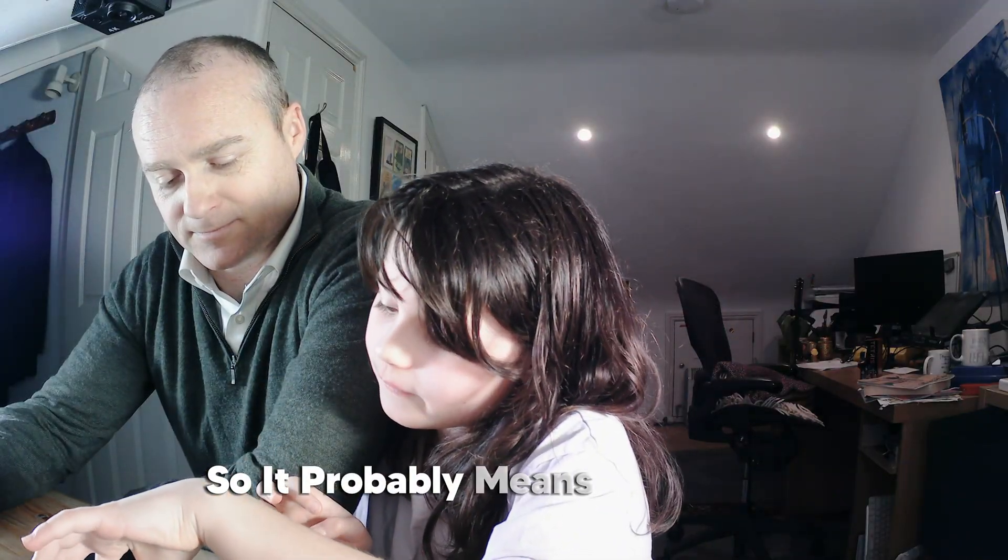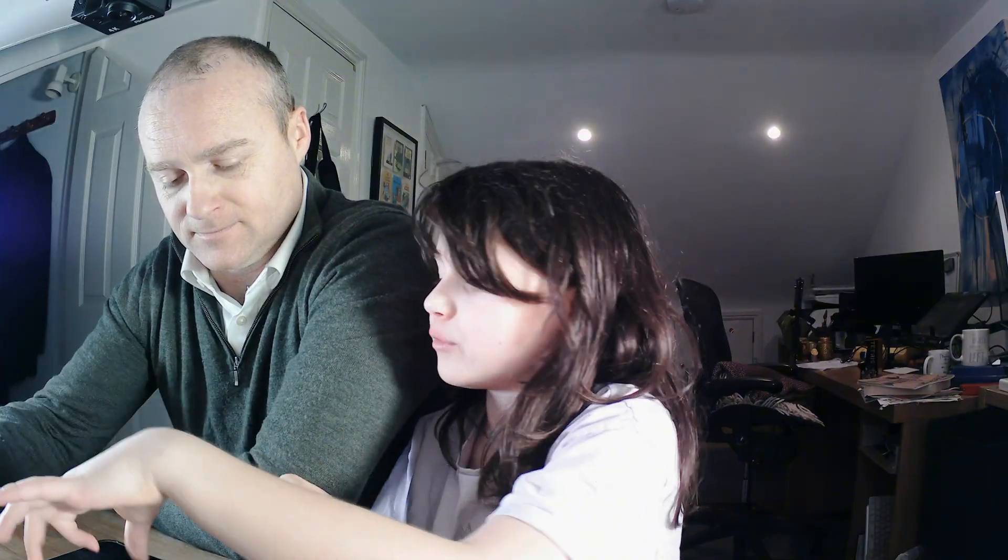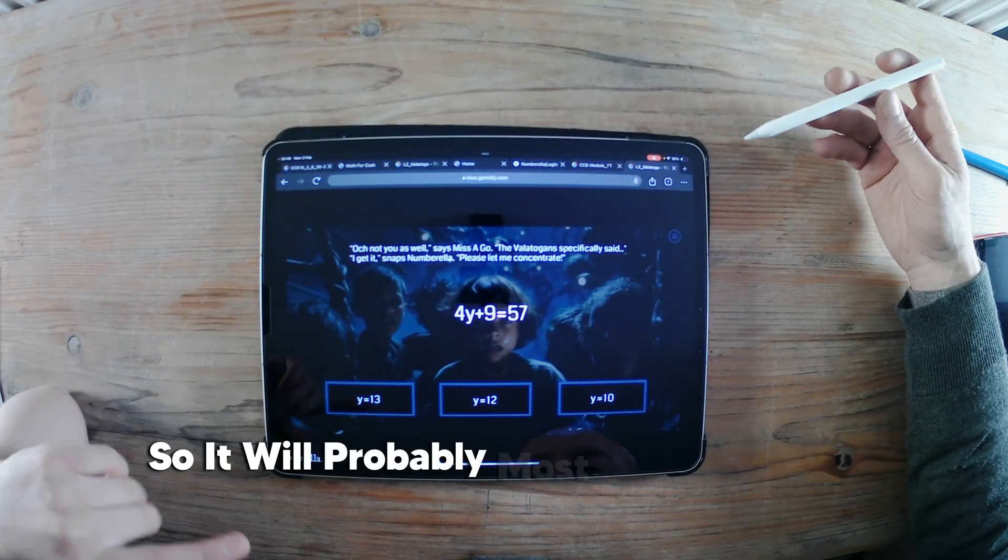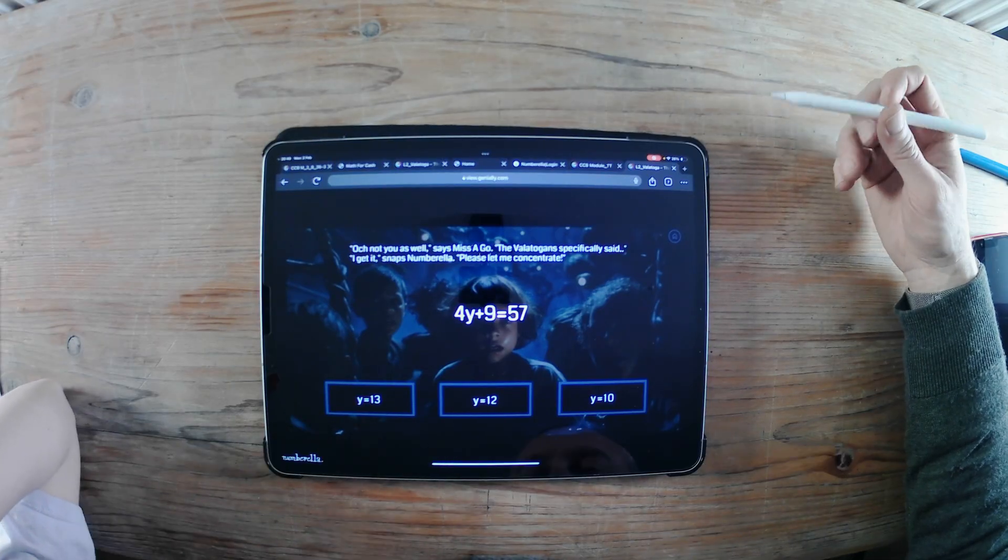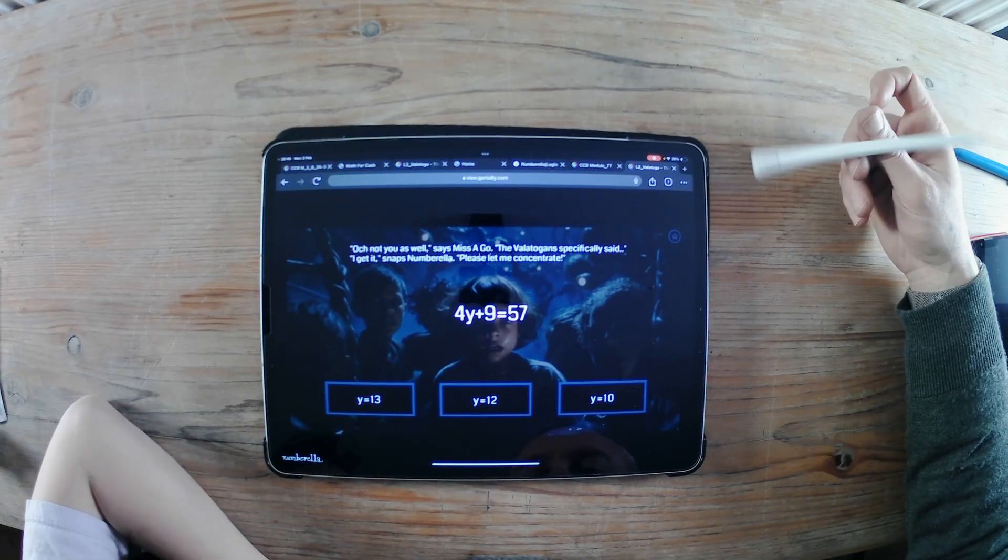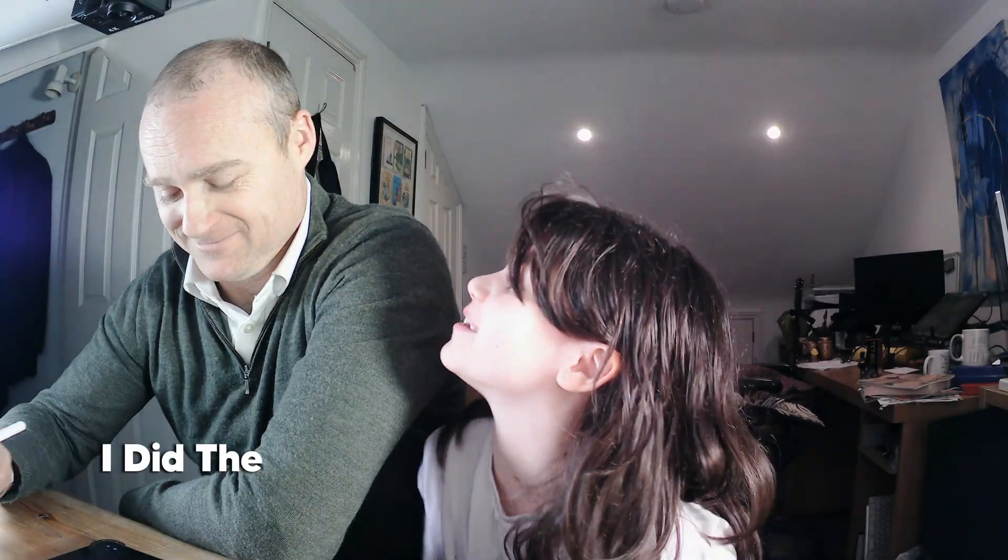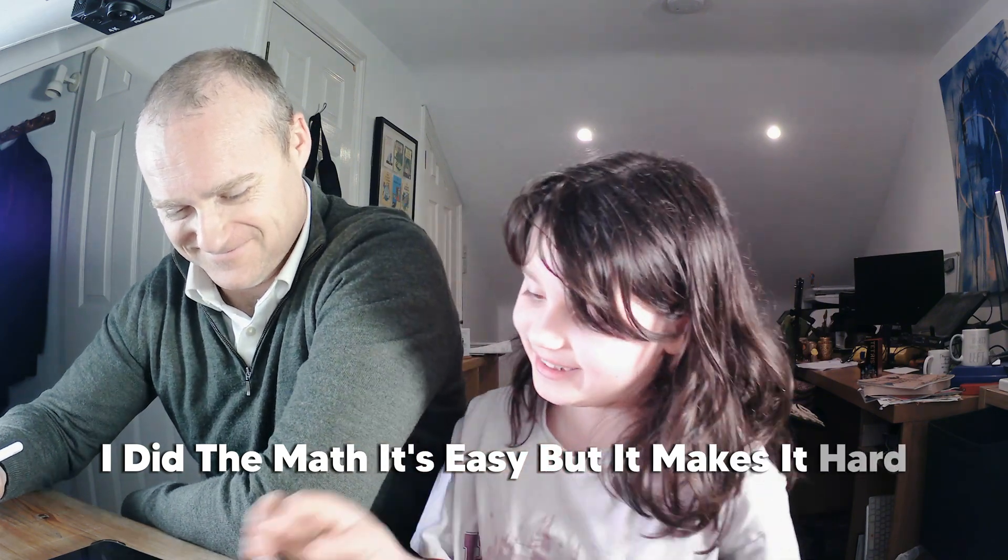Right, so, it probably means something, something, plus 9 equals 47, but we don't know what the number is. So, it will probably, most likely, be this number here. I think. Yes, yes, yes, yes. Go. Oh, I did the maths. It's easy, but it makes it hard. There is something wrong. It's very...